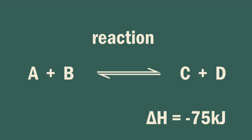Let's examine this hypothetical reaction where reactant A reacts with reactant B to produce product C and product D, with a change in heat of minus 75 kJ. This means that when the forward reaction occurs, 75 kJ of energy is released.